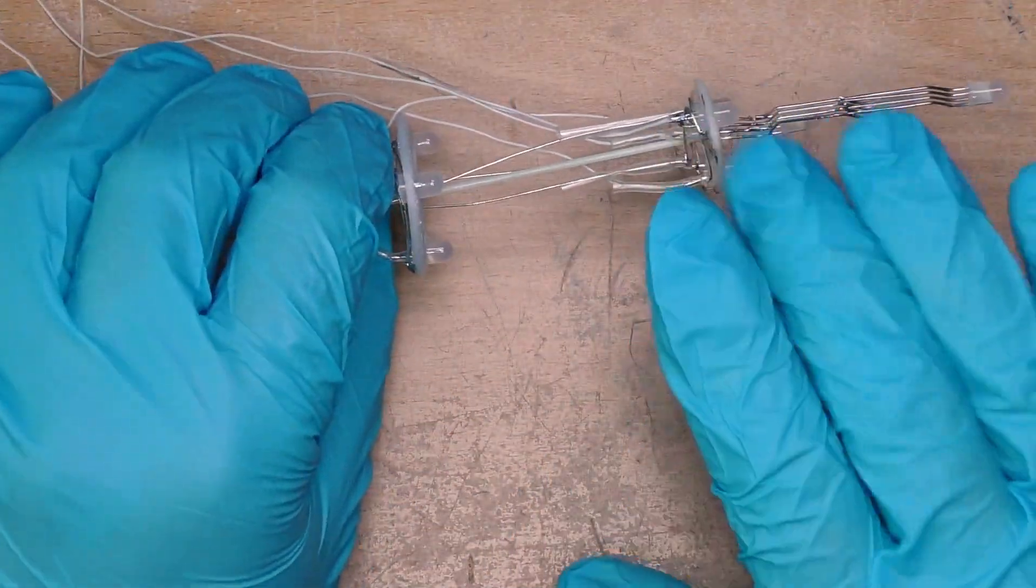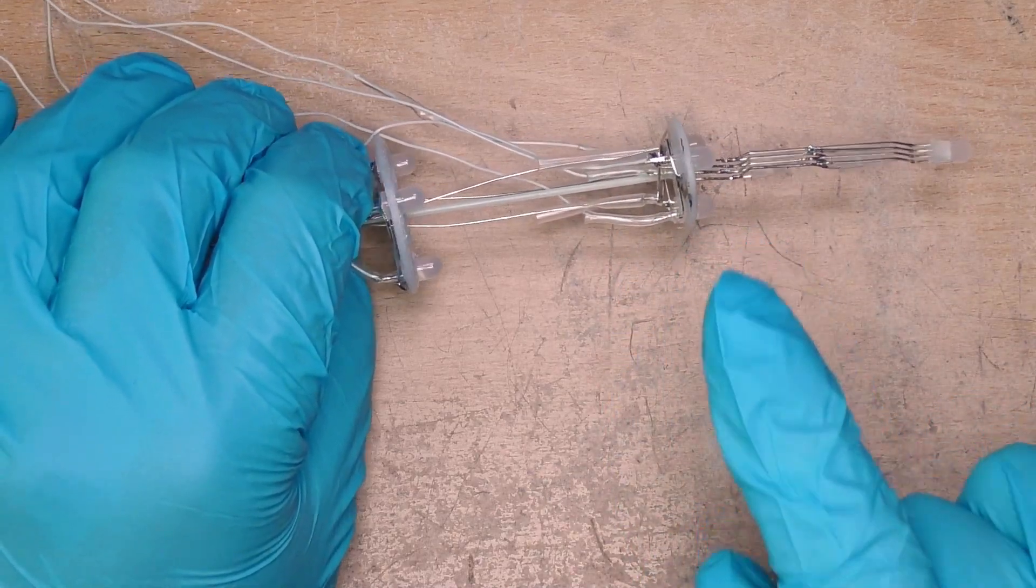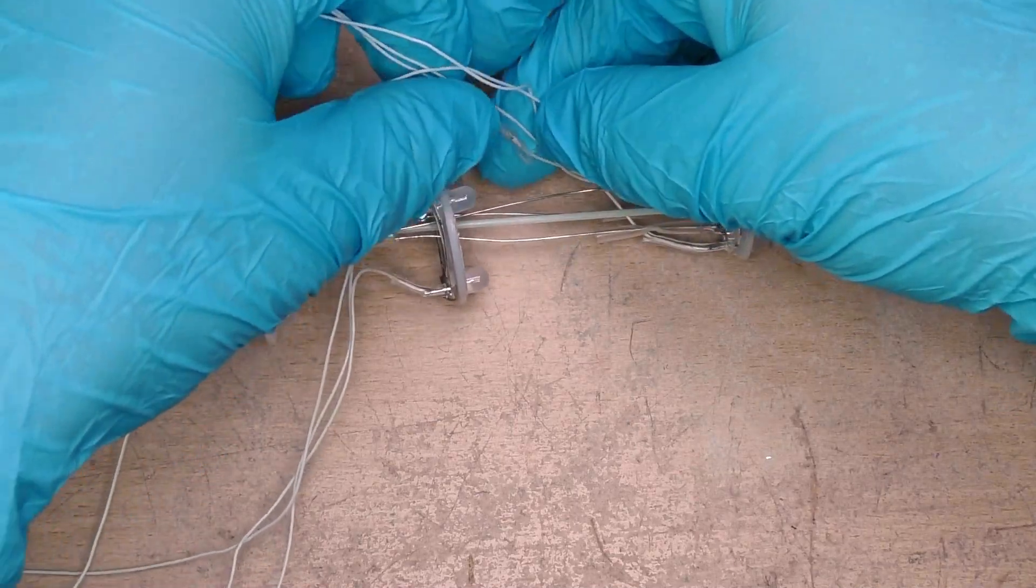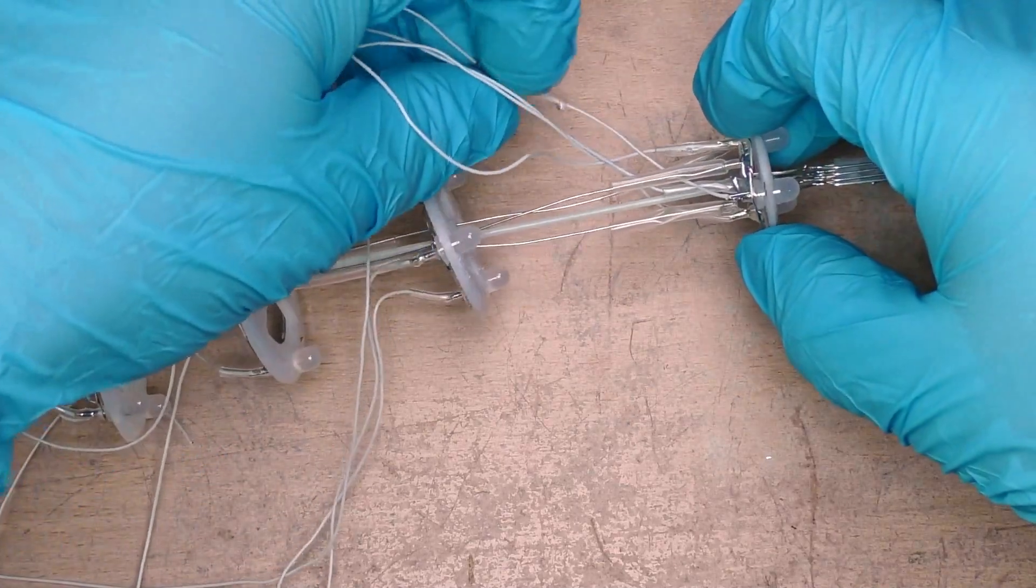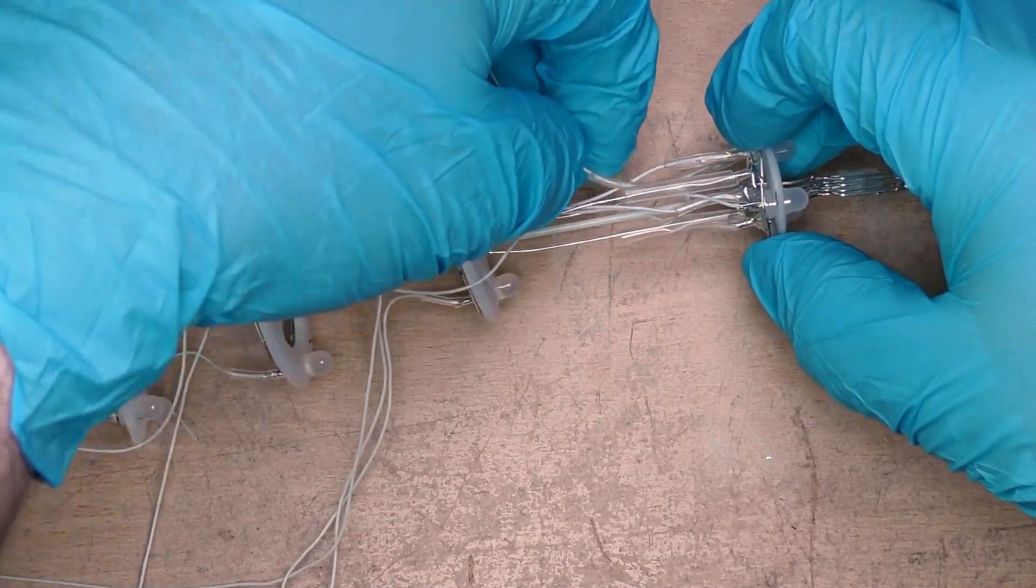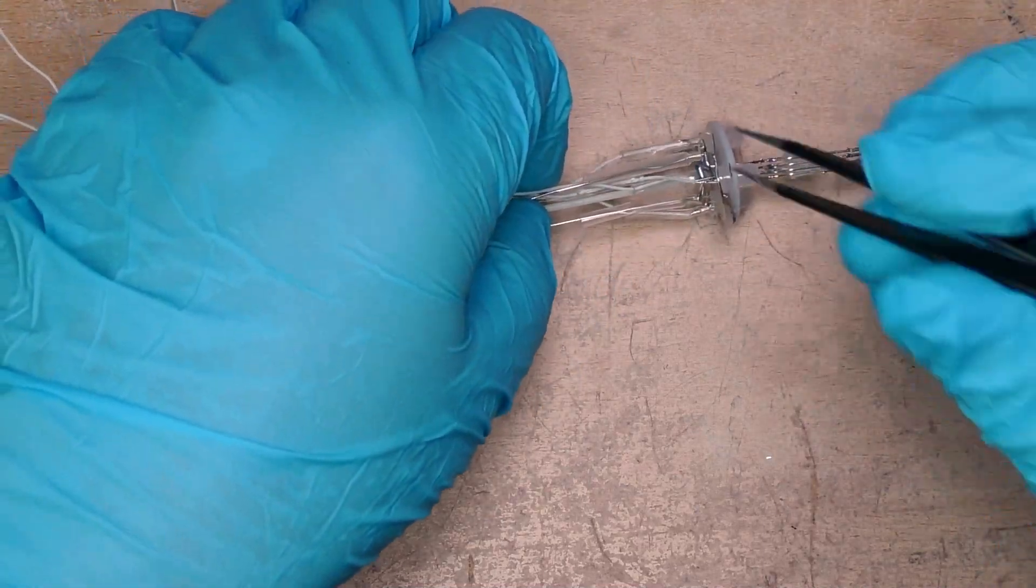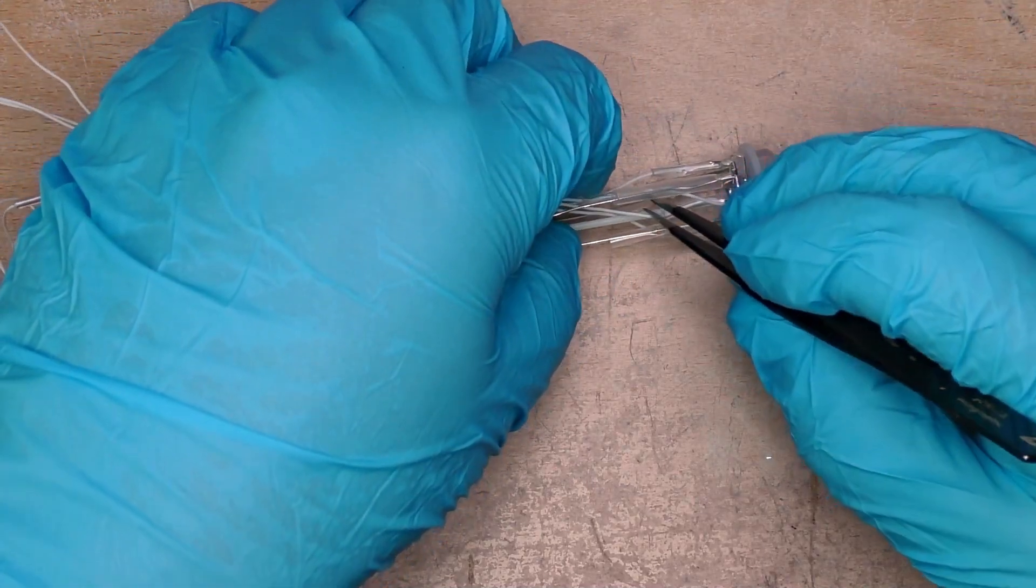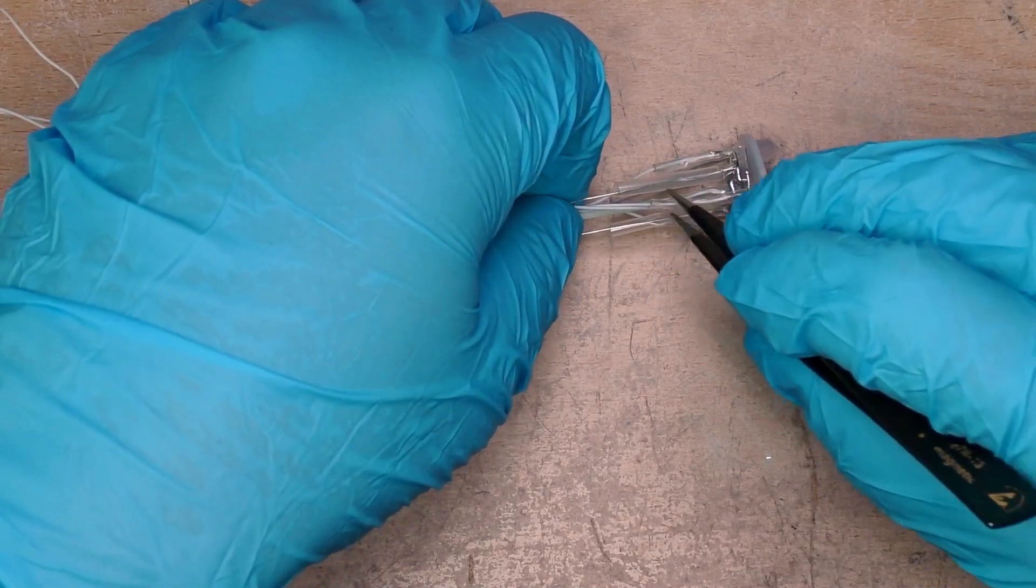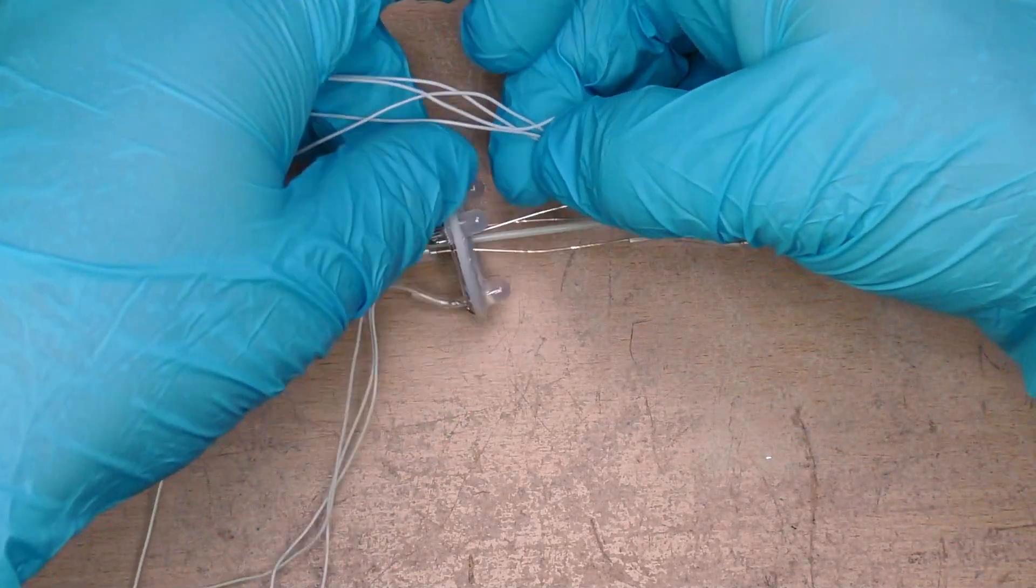So essentially this top section is wired. What I can do is feed these wires down. The heat shrink has come a bit loose, let's just get that sorted out before we go any further. This comes from not having the right diameter of heat shrink for these very fine wires.